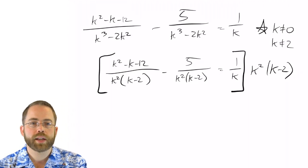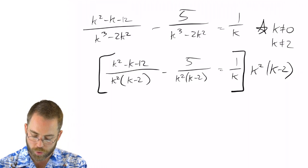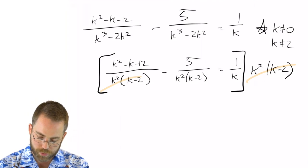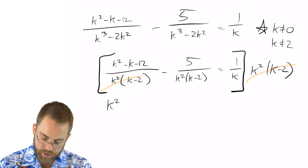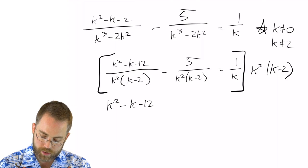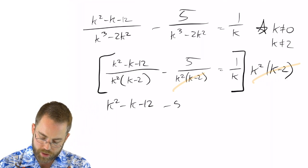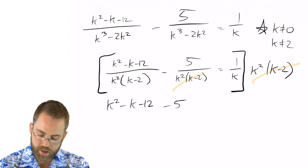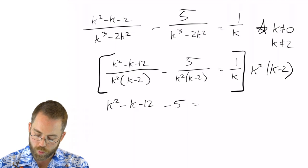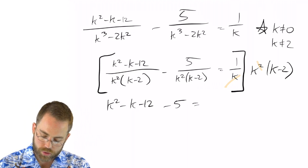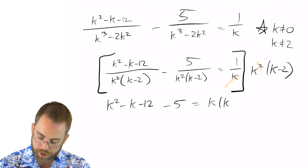And you could write that as both sides, but I'm just going to write the whole thing times that, because in the first case, that's going to cancel with the first expression, and I'll have k squared minus k minus 12. And then in the second expression, that'll cancel as well, and so I'll have minus 5. And then on the other side, across the equal sign, 1k is going to cancel, so this one and one of those. So I'll be left with k times k minus 2.